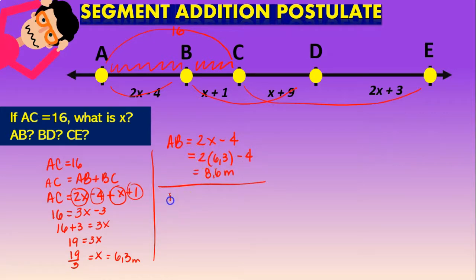The other question they ask us is, what is the distance of BD? BD. Then again, we have to remember that BD is going to be the same as BC plus CD. And I'm going to write it down. So BC is going to be x plus 1. And CD is going to be x plus 9. Meaning that BD is going to be 2x plus 10. Then we have to solve by substituting the value we already know of x. So 2 times 6.3 plus 10 is going to give us the answer of 22.6 meters.